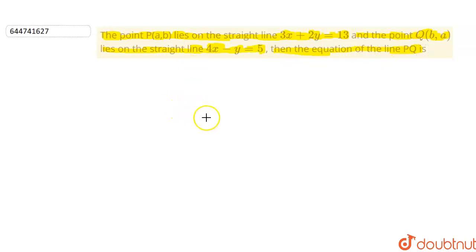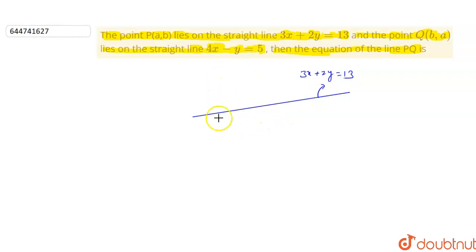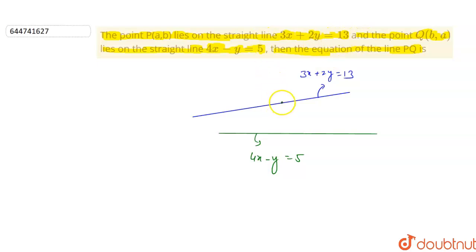Let's suppose we have a line with equation 3x + 2y = 13, and we have another line which is not parallel to this one with equation 4x - y = 5. There is a point P(a,b) on the first line, and another point Q(b,a) on the second line. We need to find the equation of line PQ.